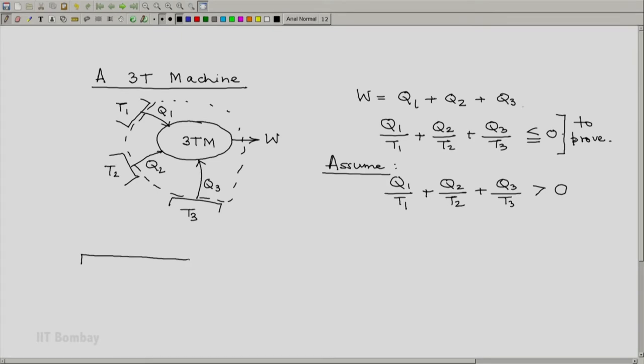Let us do the following. Let us have a reservoir at some temperature T0, and let me have three machines. The first reversible machine R1 takes the required amount of heat from the reservoir at T0 and provides to the reservoir at T1 exactly the amount that T1 provides to the system. Let that be Q1, and let this be Q01. Let this machine produce work W01.